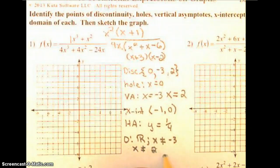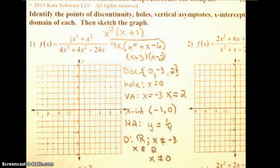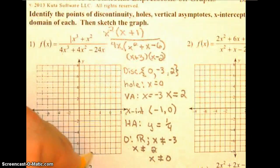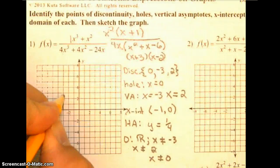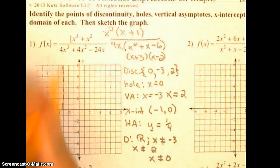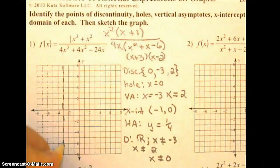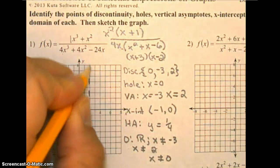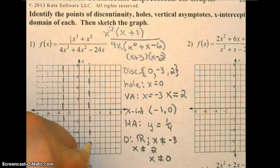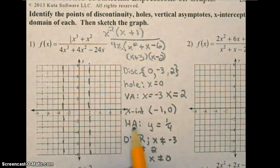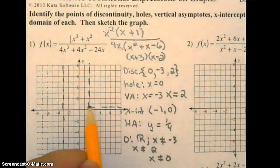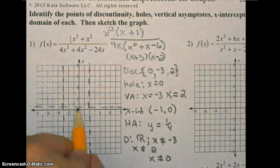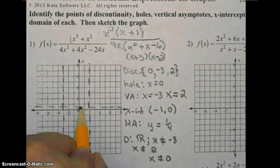At this point we're going to go ahead and graph it, so I'm going to put my vertical asymptotes in first. I'm running out of time, the bell has rung, and so I'm going to go kind of quickly here. Vertical asymptotes in first, horizontal asymptote in next, y equals one fourth. We have a hole at x equals zero, so we have a hole right here.